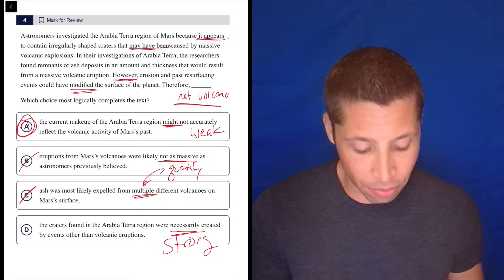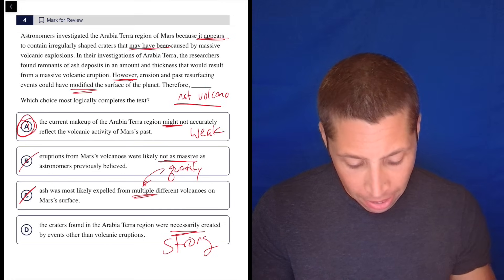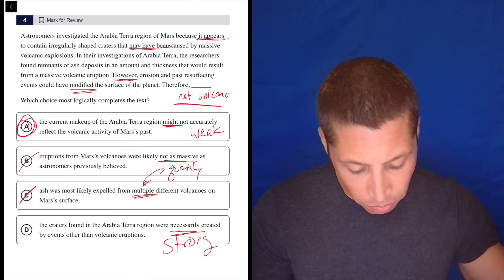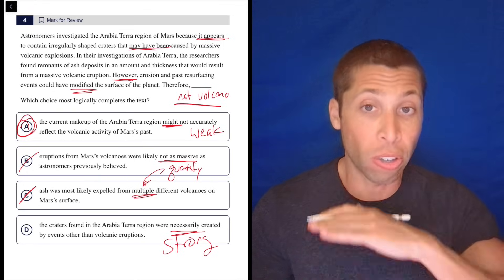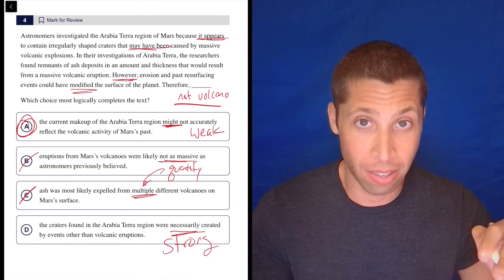So if you had never given me this passage and you had just told me to pick an answer based solely on the choices, I'd be picking A here because I know that stronger answers are riskier, right? It's not a good bet. The word necessarily is very strong. That is saying that it's not a volcano at all. The craters found in this region were necessarily created by events other than volcanic eruptions. There's no chance, zero chance, that it is a volcano.